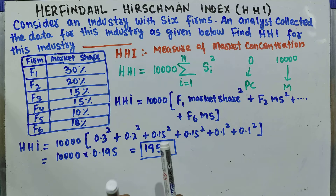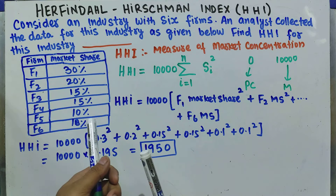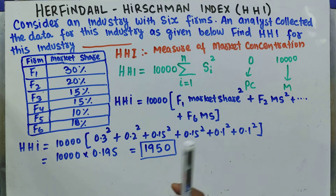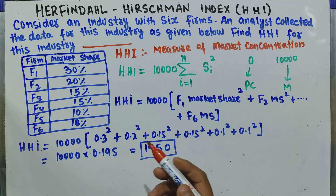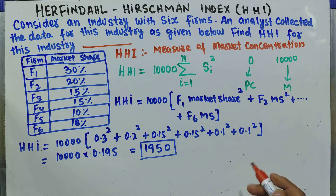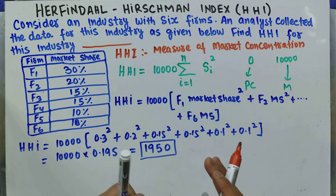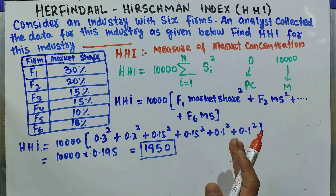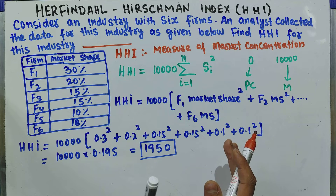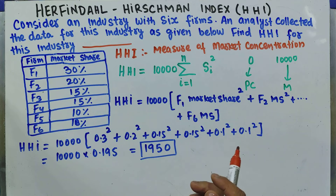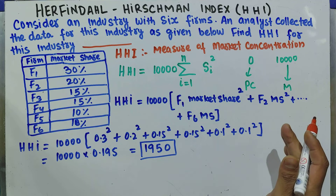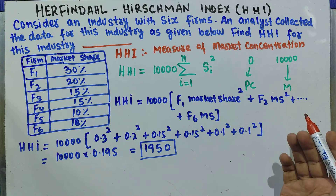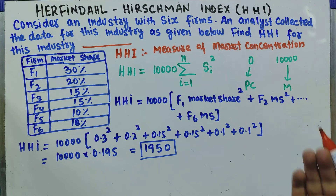So the simple procedure is: square the market share of each firm, add them up, and multiply by 10,000. If the HHI value comes out to be zero we have an infinite number of firms — perfect competition. If its value is 10,000 we have a monopoly. The closer a market is to monopoly, the higher the concentration and the lower the competition.